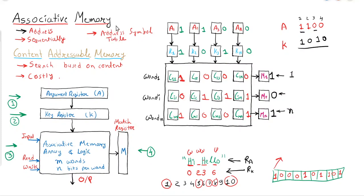We will not focus in much more detail on how the read and write operations are implemented internally. For finding a particular word matching a condition, it can be implemented using AND gates on all inputs, where the bits we are ignoring are inverted and ANDed with the word. But we will not focus much more on the implementation. This concludes our discussion of content addressable memory. In the next tutorial we will discuss cache memory. Thank you.